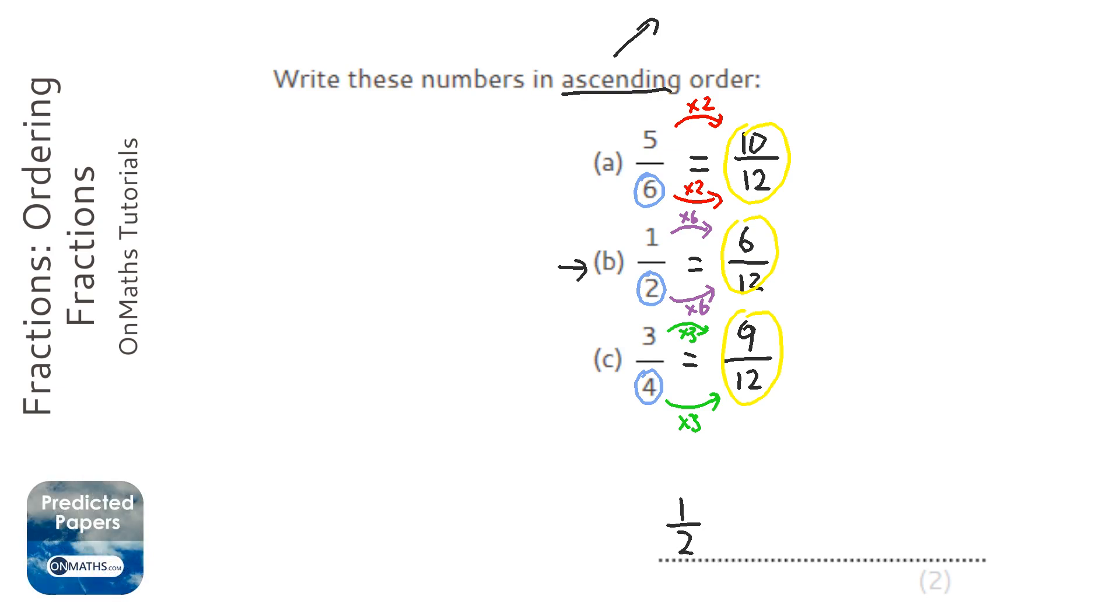Looking at them, c looks the next smallest, and don't forget we're going to copy down three quarters and not 9/12. And then a looks like the largest because the numerator is the biggest. Again, be careful to copy down the original fraction.